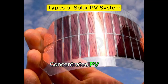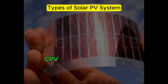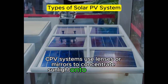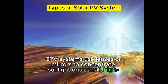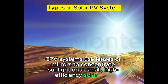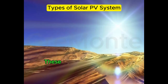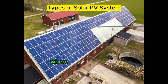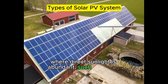Concentrated PV (CPV) system. CPV systems use lenses or mirrors to concentrate sunlight onto small, high-efficiency solar cells. These systems are typically used in utility-scale installations where direct sunlight is abundant, such as desert regions.